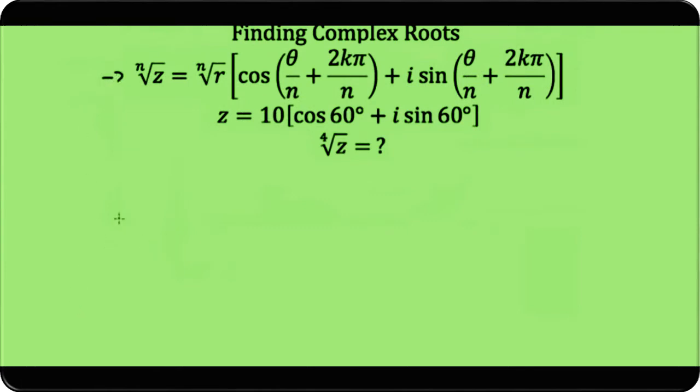We have our formula. We want to take the fourth root of z, where z equals 10[cos 60° + i sin 60°]. So the fourth root of z will equal